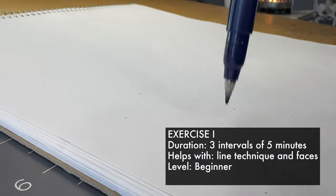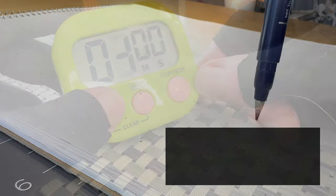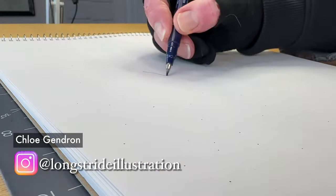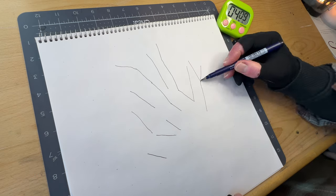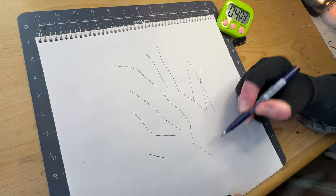Draw many dots randomly spaced on your paper. Set your timer to five minutes, press start. Connect the dots with a series of straight lines of different lengths. There's no particular pattern, just join dots in any direction.